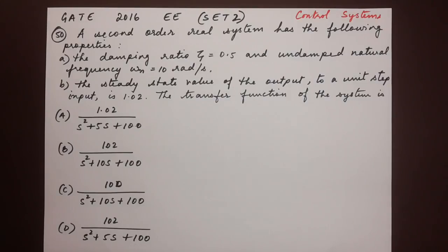A second order real system has the following properties: A) The damping ratio ξ equals 0.5 and undamped natural frequency ωn is 10 radians per second. B) The steady state value of the output to a unit step input is 1.02. The transfer function of the system is dash.